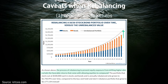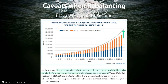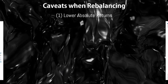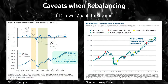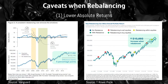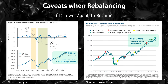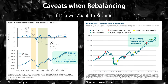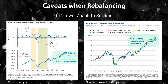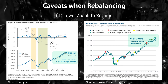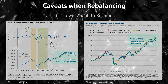It's a trade-off — lower risk for potentially lower returns. However, there are some periods when rebalancing can result in better absolute returns, typically after down markets, as Vanguard and T. Rowe Price showed for the 10-year period between 2005 and 2015.